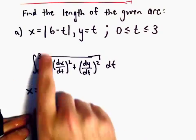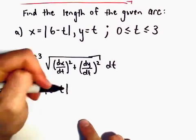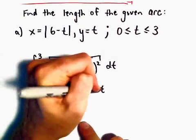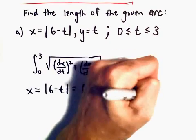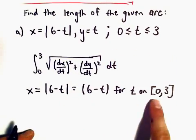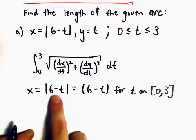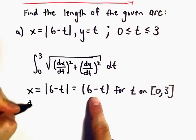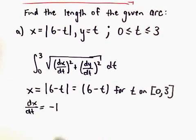Notice that for x equals the absolute value of 6 minus t, we can say this is the same as 6 minus t for t on the interval 0 to 3. Because if you take any value between 0 and 3, the 6 minus t will stay positive, so we can just remove the absolute value. That means the derivative of x with respect to t is just going to be negative 1.